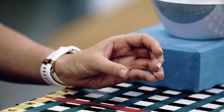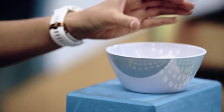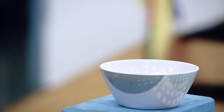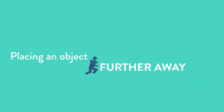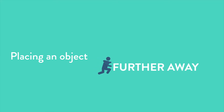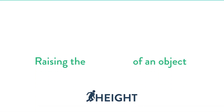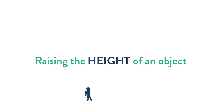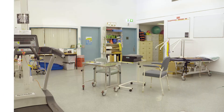A third way to shape an activity is to change the object position. For example, placing an object further away to challenge range of movement, or raising the height of an object to challenge strength — for example, reaching from a standing position then a seated position.